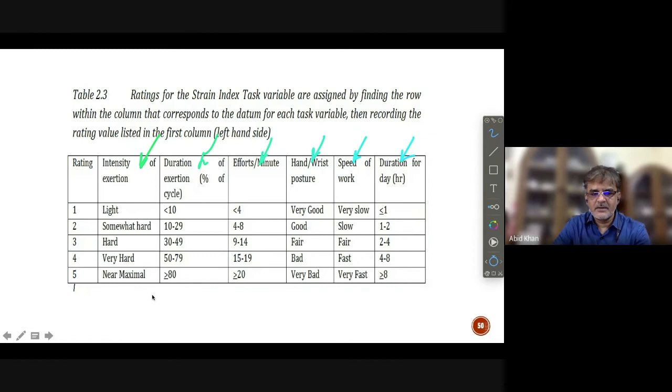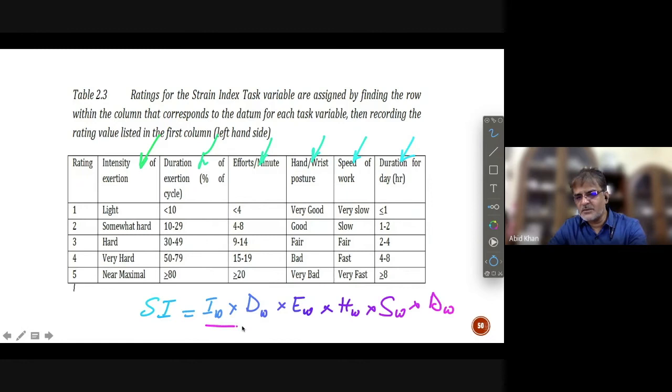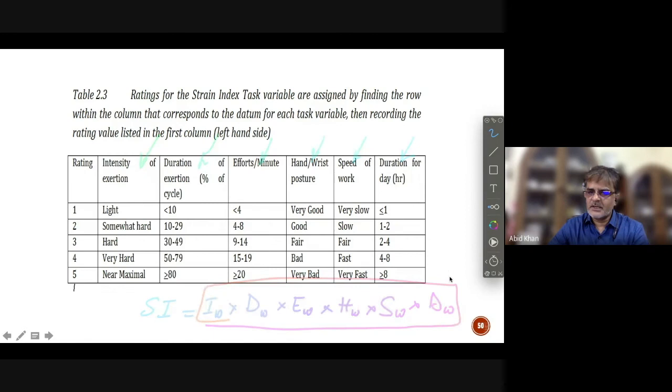But in general, the formula what they gave is nothing but the strain index is the multiplication of the weightage of intensity of exertion multiplied by duration of exertion weightage into effort weightage, hand-wrist posture weightage, then speed of work weightage, and the duration per 8 hours weightage. But these weightages are defined by Gurg with respect to their industrial survey, with respect to their research outcome.